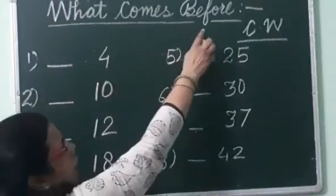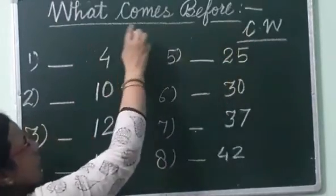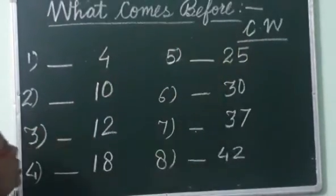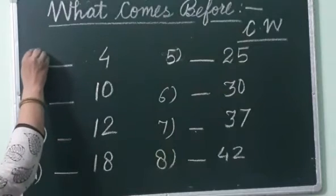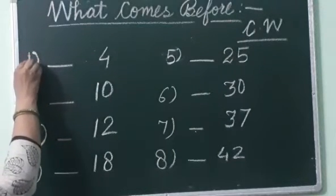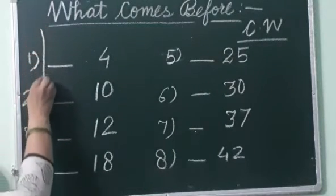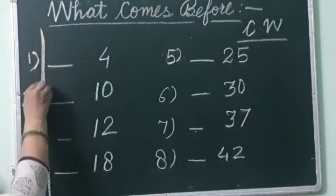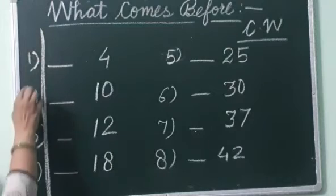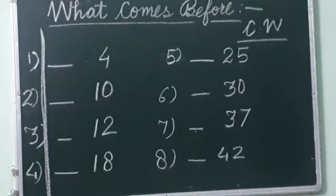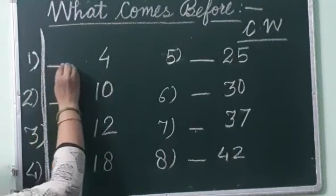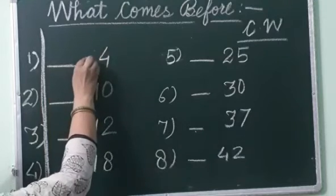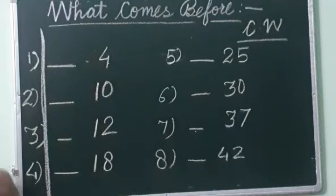Look here children, this you write in your copy. Write what comes before classwork. This is the first question. Your number should be written before the margin line. Put dash on the first box, then leave a box and write number 4. Now you have to find it out, what comes before 4?